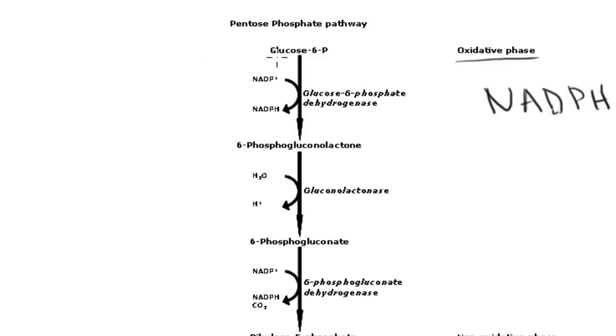So we actually start out with glucose 6-phosphate here. So just note that we start off with this molecule here, which I'll remind you is one of the first metabolites that's produced in glycolysis. So this is essentially shunted from glycolysis, which starts out with glucose. So glucose enters glycolysis.